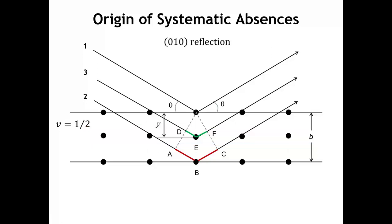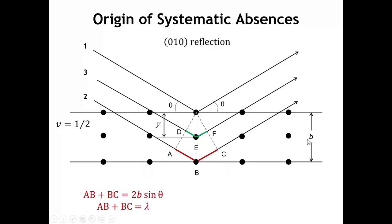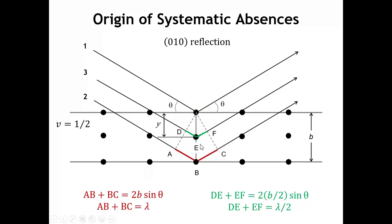Let's think about the optics and path length differences of these different x-rays. Bragg's law tells us that for wave 2, the extra path length with respect to wave 1 is given by AB plus BC, which is twice the distance between the planes times sine theta. That distance here is the b unit cell vector, and Bragg's law says that should be one wavelength difference. Then for ray 3, its extra path length DE plus EF is similar, except the hypotenuse of our right triangle is only half as big — so instead of b, it's b over 2.